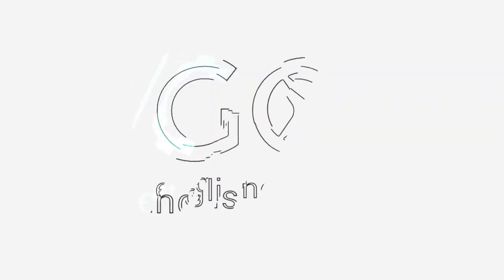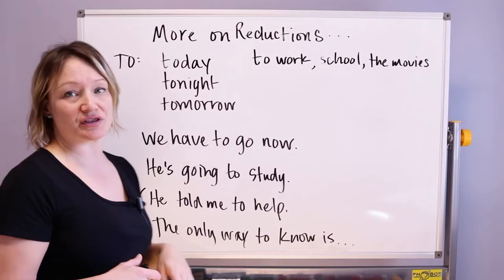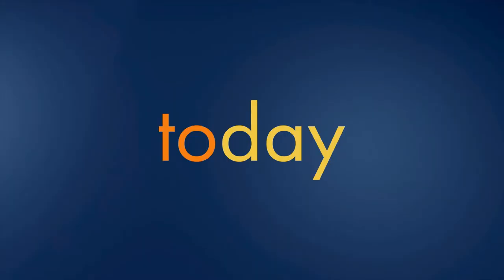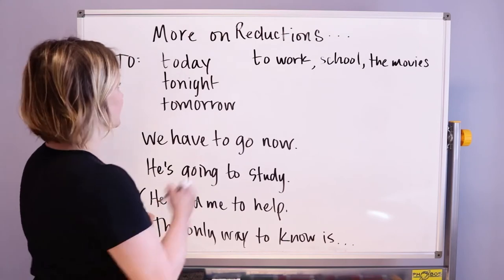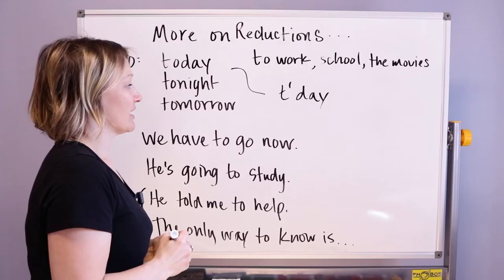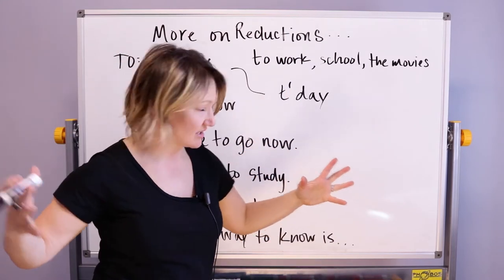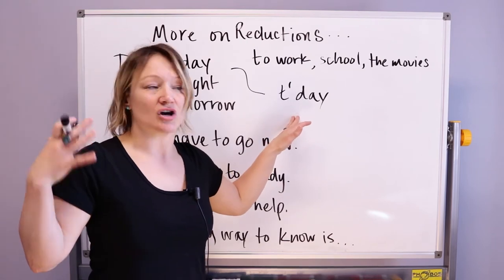Stressing is easier in my opinion than reducing. Here I've got some examples with the preposition 'to.' When I say 'today,' I'm not saying 'to-day' — I'm saying 'today,' jumping from that 't' to the 'd' very quickly. It almost sounds like 'tday,' showing that that sound is taken out, just like we use that in a contraction.